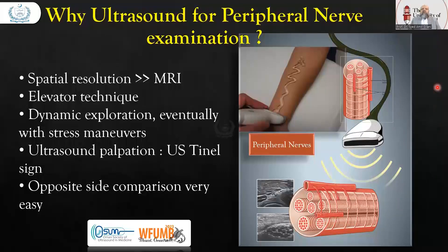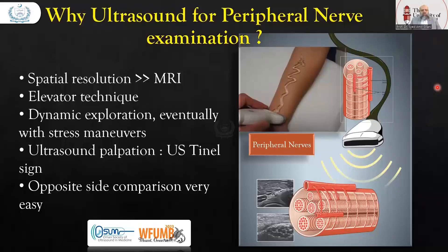The next question is: what are the peripheral nerves? The peripheral nervous system is one of the two components that make up the nervous system, with the other being the central nervous system. The peripheral nervous system consists of nerves and ganglia which lie outside the brain and the spinal cord. So the central nervous system is the brain and spinal cord, and all other nerves are peripheral nerves.